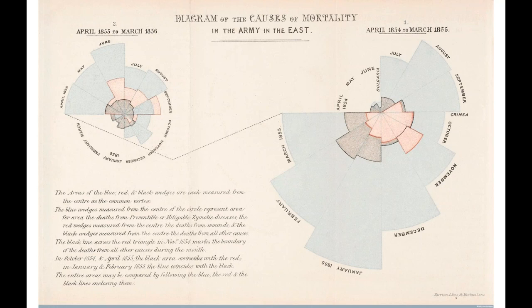Florence Nightingale used these visualizations to show that while generals focused on the battlefield, the vast majority of deaths were happening due to poor sanitation and infections in field hospitals. She took this data to the Army to convince them to invest in proper sanitary practices and to develop nursing. The amazing thing about these visualizations is they took data presumably available to the Army but allowed the generals to see something that was apparent but that no one had thought to look for. Out of this work in Crimea, we get the modern practice of nursing.